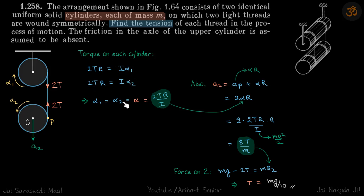This means alpha 1 equals alpha 2. Let's call it alpha, so the value of alpha will be 2TR by I. We need the value of tension, but what we got is alpha. So now we need to focus on the lower cylinder to analyze the forces and find the value of tension.